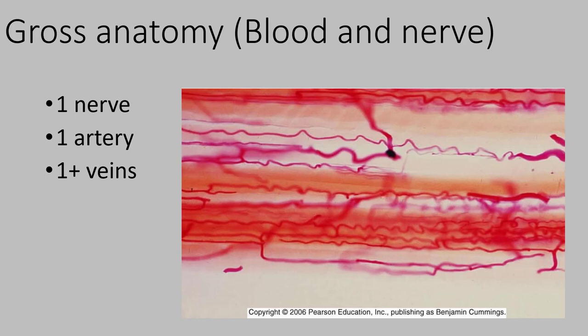Let's talk about the gross anatomy of skeletal muscle. Gross anatomy means big enough to be seen with the naked eye. A muscle is an organ — things like the biceps brachii, triceps brachii, or deltoid. One whole muscle is innervated by one nerve — and remember a nerve is a collection of neuron axons, so one nerve contains many neurons. One artery brings blood carrying oxygen and nutrients to a muscle, and at least one vein carries blood away.